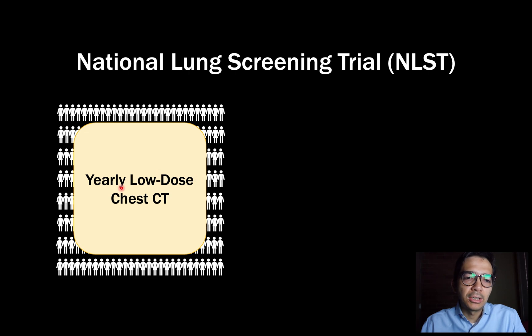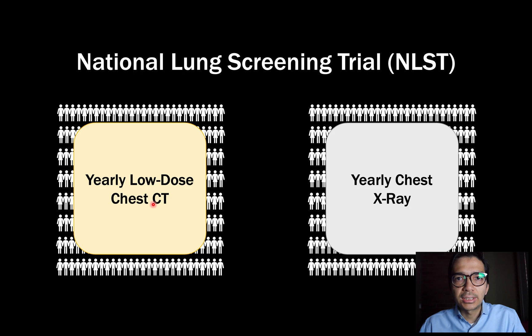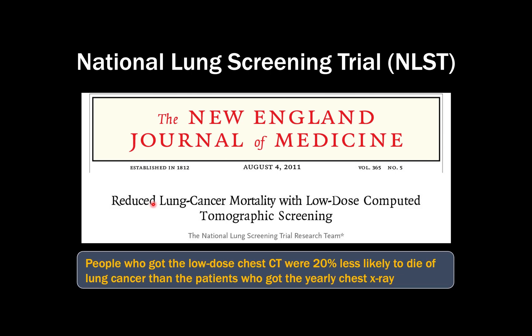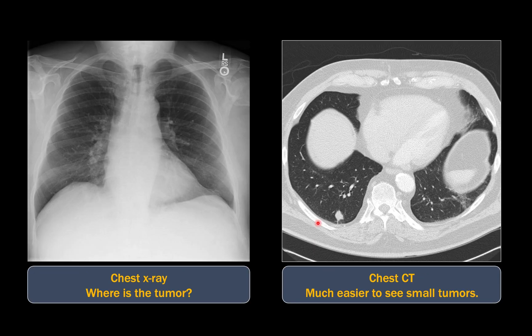The first group got a yearly low-dose chest CT — we'll talk about what that is in a little bit — and the second group got a yearly chest x-ray. What this trial showed was that the patients who got the low-dose chest CT were 20% less likely to die of lung cancer than the patients who got the yearly chest x-ray.